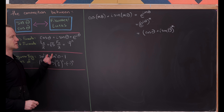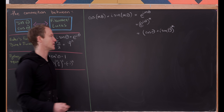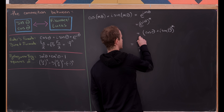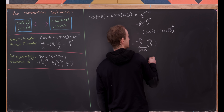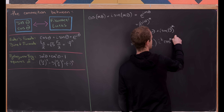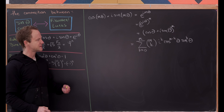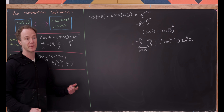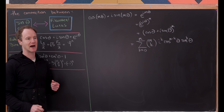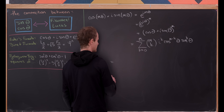That's a binomial raised to the mth power, and the binomial theorem tells us how to expand it: the sum as k goes from 0 to m of C(m,k) · iᵏ · cos^(m−k)(θ) · sin^k(θ). Even powers of i give ±1 (pure real numbers), while odd powers of i give ±i (pure imaginary numbers), so that motivates us to split this into two sums — the even part and the odd part.